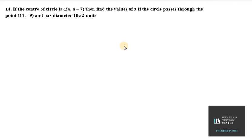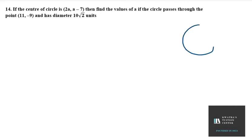Hello everyone, let's start with question number 14. It says: if the center of the circle is (2a, a−7), find the value of a if the circle passes through the point (11, −9) and has diameter 10√2 units.